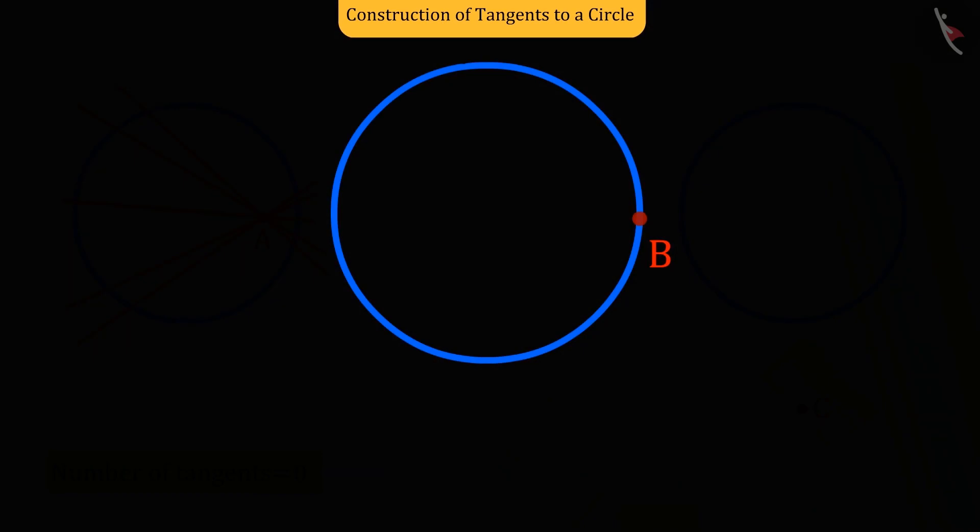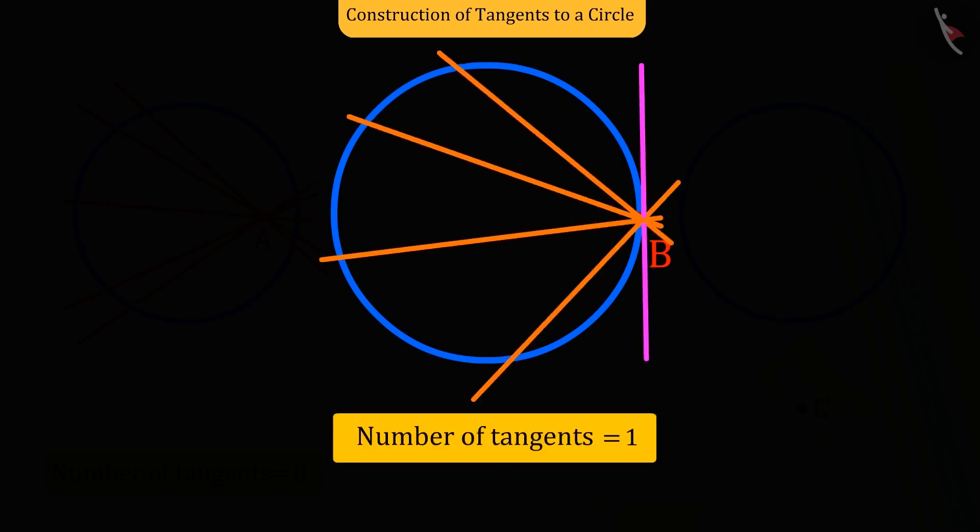The point here is on the circle. And we know that from any point on the circle, there is only one tangent that can be drawn on the circle.